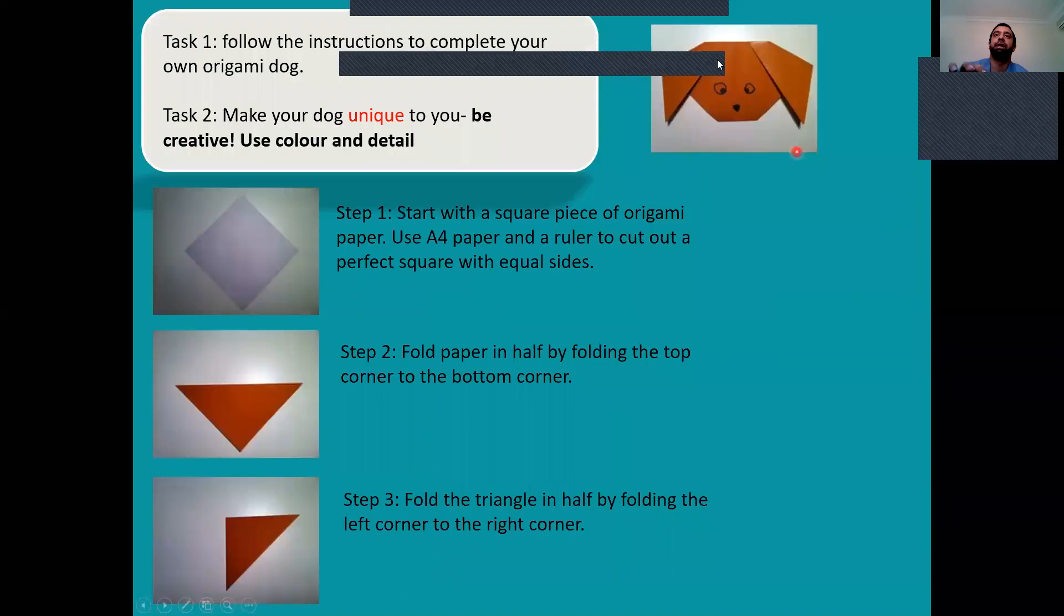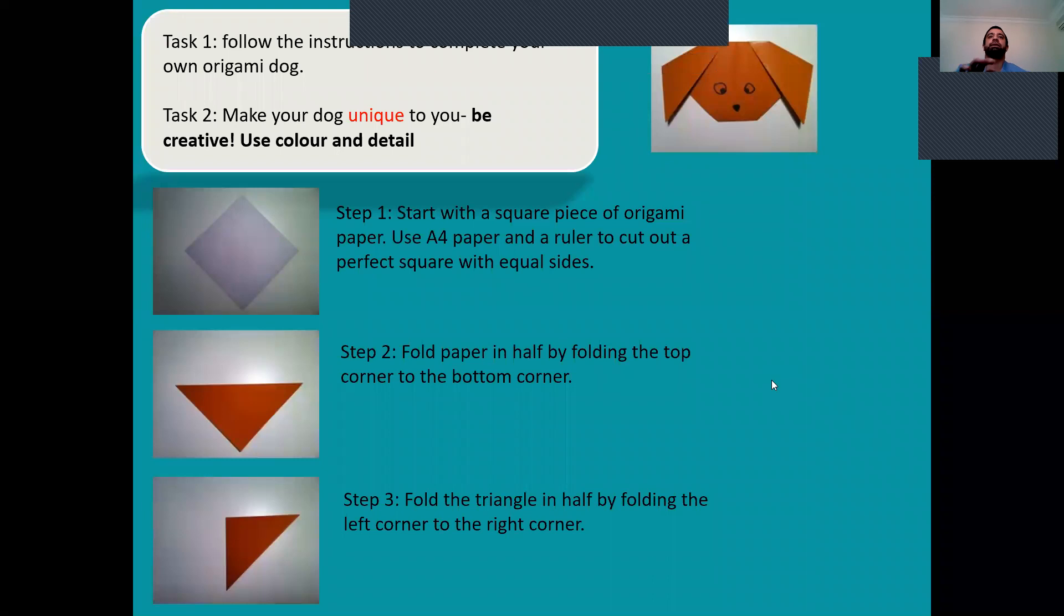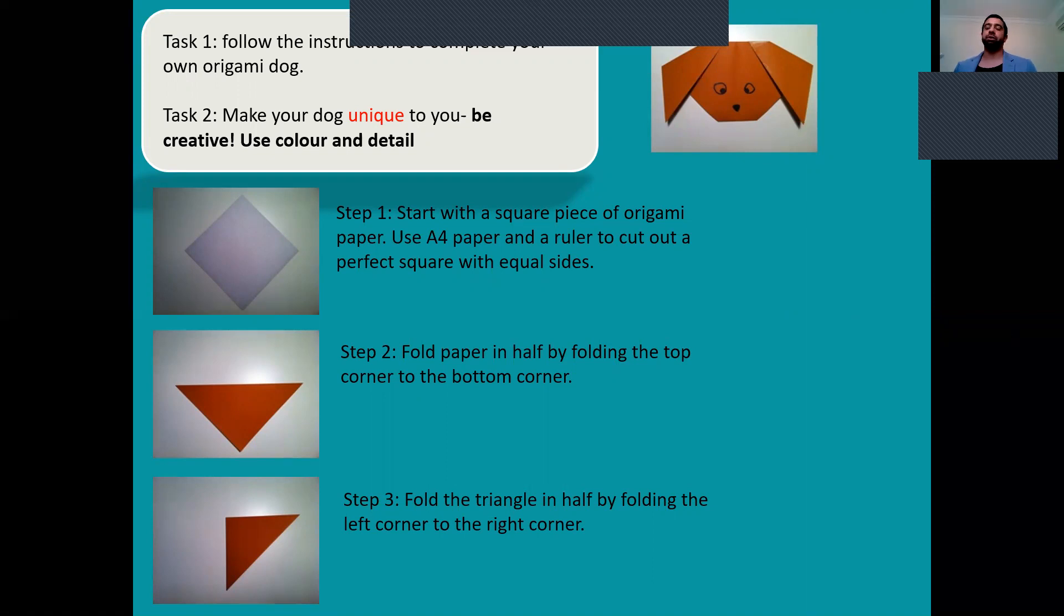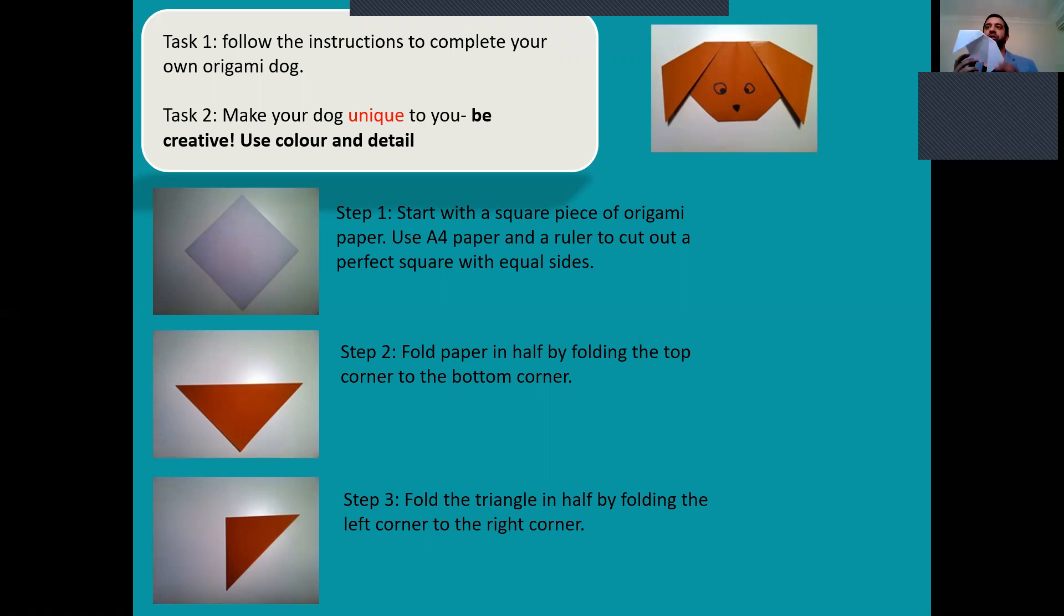Right, so this is going to be your task. Your task is to follow the instructions to complete your own origami dog, and there's an example on the board here. Task two is to make your dog unique to you—be creative, use color and detail. First thing, focus on task one. We're going to create it and I'm going to do this quickly with you. Even though the steps are quite clear, I'm going to show you how to do it.